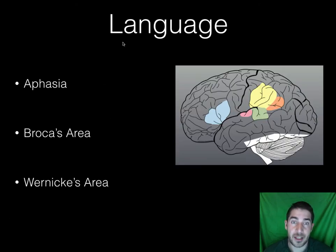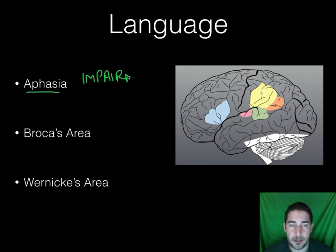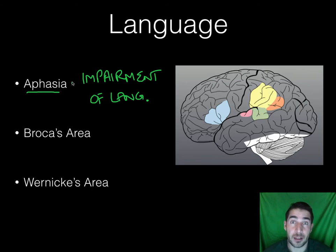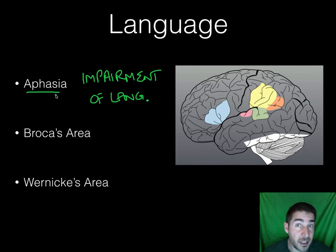The last thing we're going to talk about is three things with language. When we talk about language, we first talk about what happens when language goes wrong — we have something called aphasia. Aphasia is an impairment of language: whether it's speaking, comprehending, or not being able to read and comprehend words off a page. There are different types of aphasia with different names, covering any sort of impairment with language.